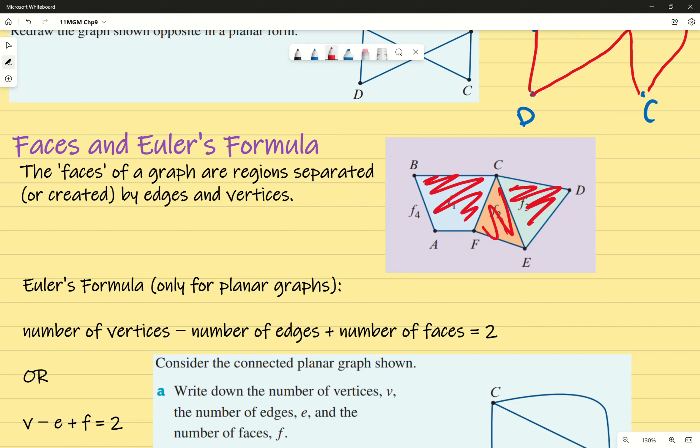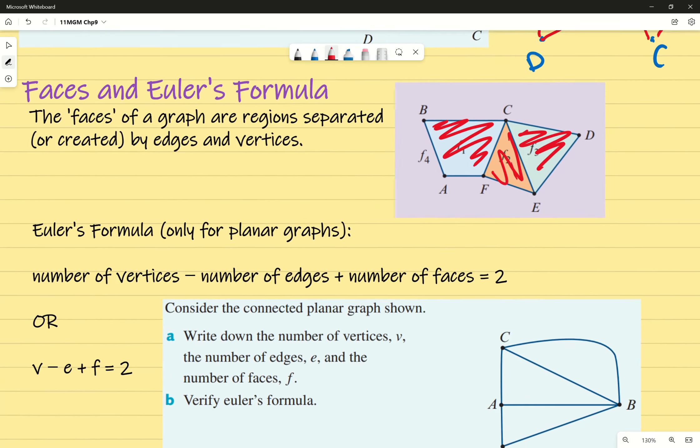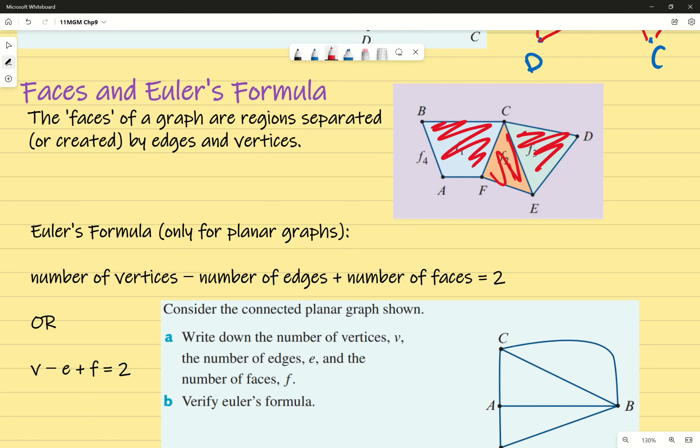Euler's formula only works for planar graphs. It does not work if two edges intersect where it's not a vertex. His formula is: the number of vertices minus the number of edges plus the number of faces always equals two.